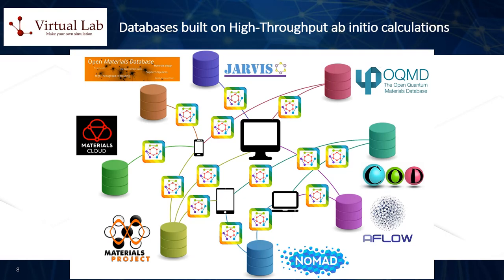Some of the most important and comprehensive databases based on DFT ab initio calculations are the Open Quantum Materials Database, or OQMD, the AFLOW database framework for materials discovery, and the Materials Project. These databases are continuously populated with newly predicted material structures obtained via such first principles computations, which allows for a relatively straightforward screening of desired physical properties, using a combination of high-throughput ab initio calculations and, increasingly, statistical and machine learning-based approaches.